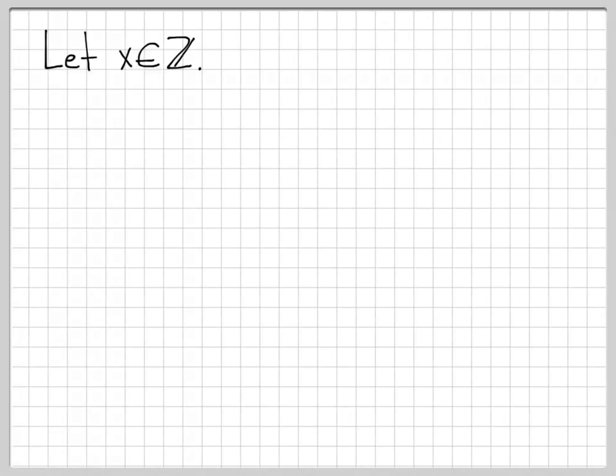This is another if-and-only-if type proof. We are going to work with x in Z, so Z is some integer, negative 2, 3, 7, something like that in the set Z. We are going to show that x is odd if-and-only-if 5x plus 4 is odd.